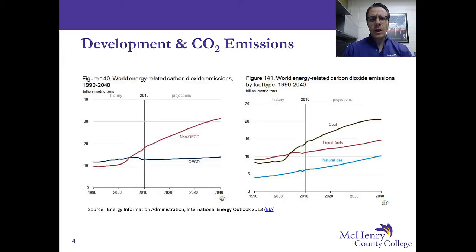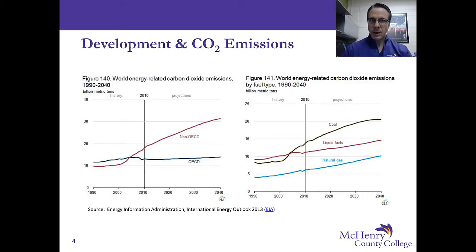This is important because as we look at carbon mitigation strategies around the world, a question always comes up: who ought to be responsible? Should it be OECD countries, who have a vast amount of their wealth and development built on the backs of carbon dioxide emissions? Or should it be non-OECD countries, who are starting to catch up using the same low-hanging fruit — fossil fuels, coal, petroleum and natural gas — that OECD countries used to spur their development.